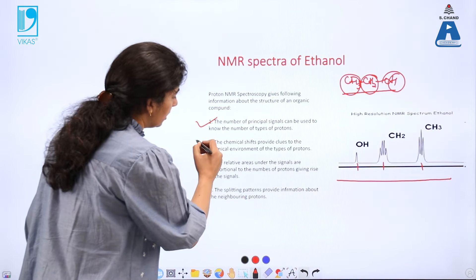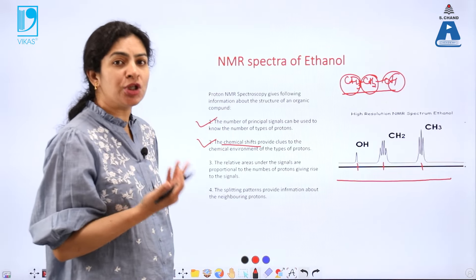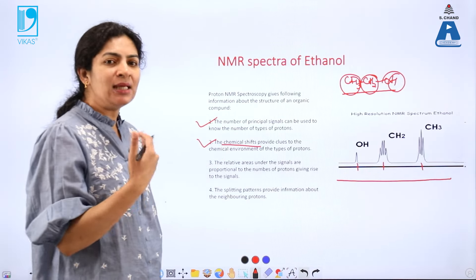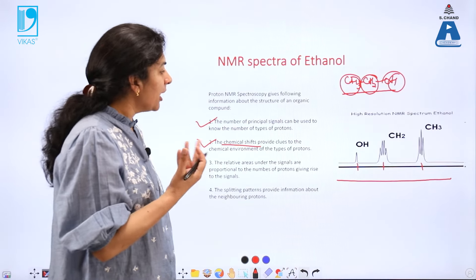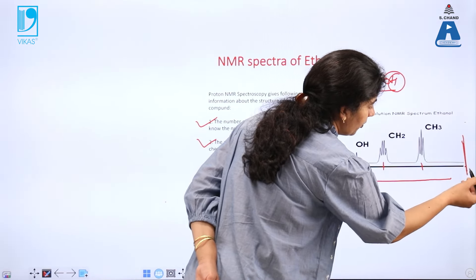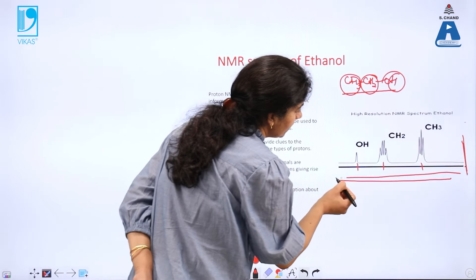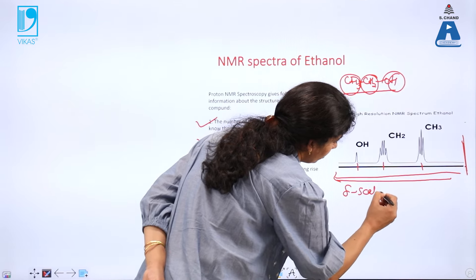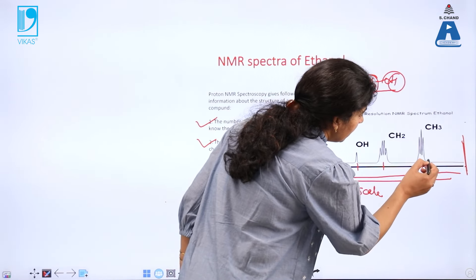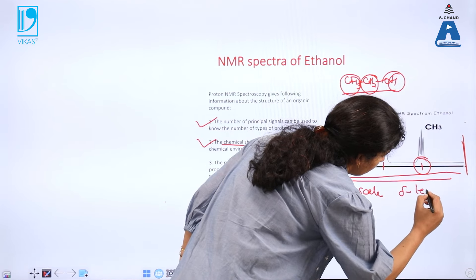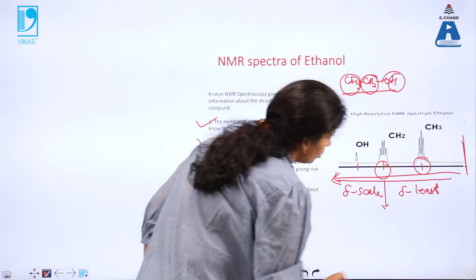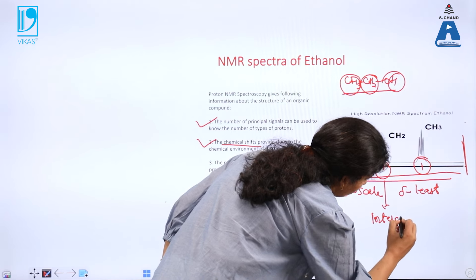The second information that we get from here is about the chemical shift. Chemical shift, as we have understood in part one of this presentation, is dependent on the chemical environment. We can see here that from right to left the delta scale value is increasing, meaning the methyl protons have the least delta value and CH₂ protons have an intermediate value of delta.